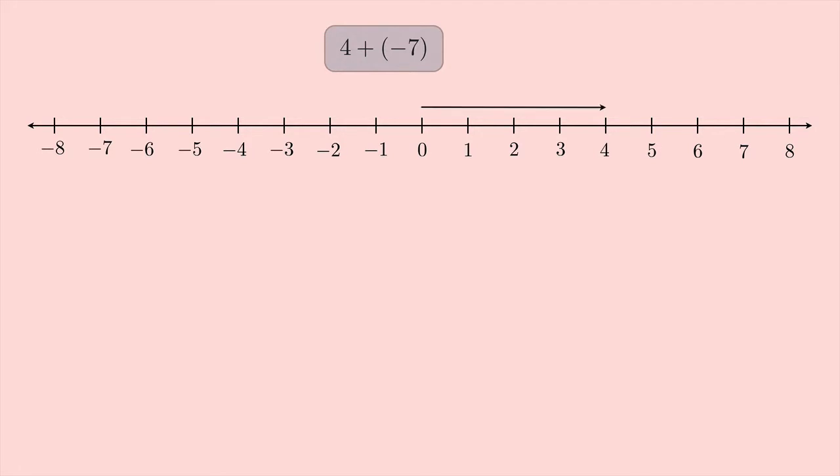So the first thing you should do is draw a number line. And we're going to start at the origin, and we're going to go to the right 4, because it's positive 4. Positive means go to the right.